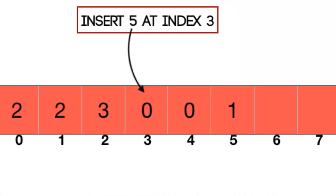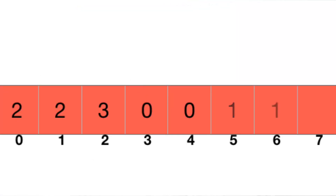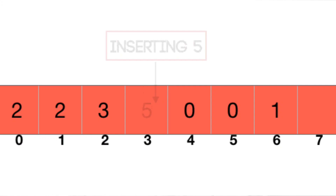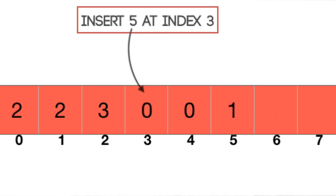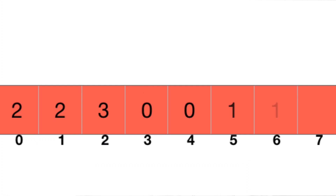Coming to insertion and deletion operations in arrays, it is a bit costly compared to linked lists. If you want to insert an element 5 at index 3, you need to do shift operations. Whereas if you want to insert an element in a linked list, it is a bit easier. You can see the operations of linked list on the screencast.